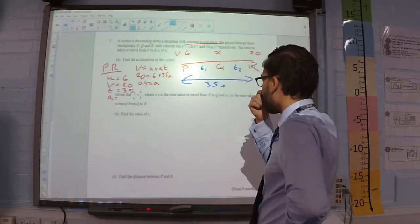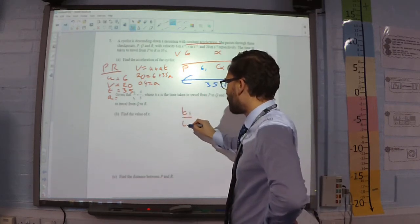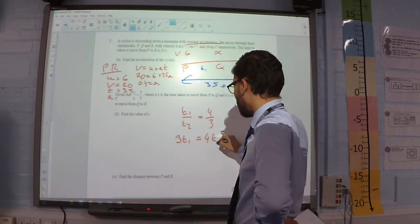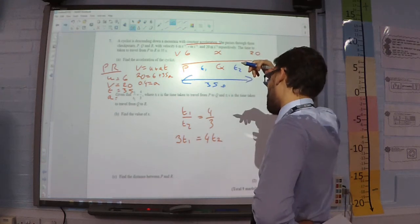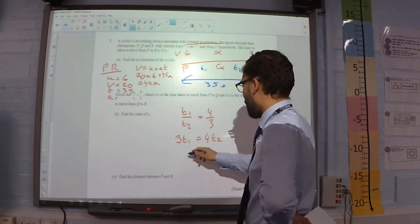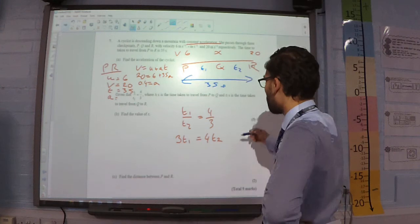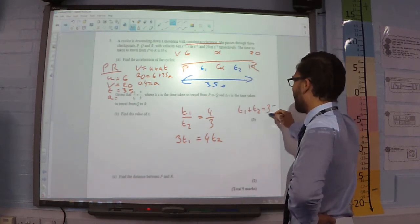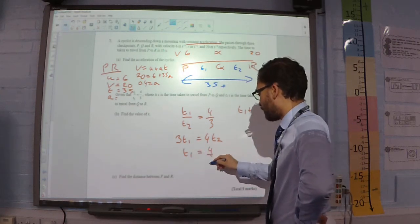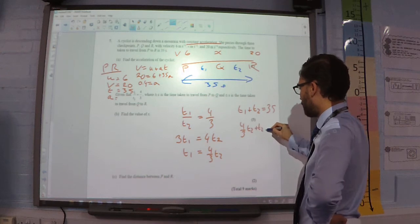Find the value of X. So, T1 over T2 equals 4 over 3. Cross multiplying tells me that 3T1 is equal to 4T2. I also have that T1 plus T2 has to add together to make 35 seconds. So, if I substitute that in, I get 4 over 3 T2 plus T2 is equal to 35.